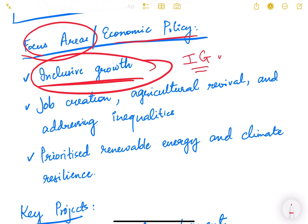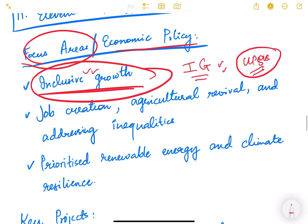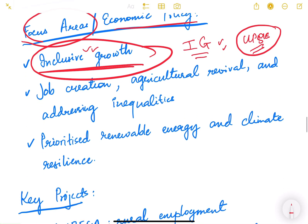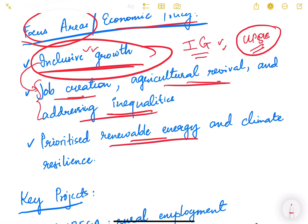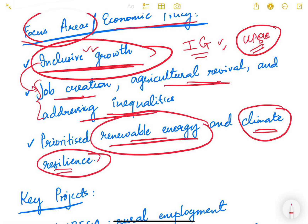Inclusive growth is also an important topic in the UPSC mains syllabus. Job creation, agricultural revival, and addressing inequalities were key focus areas — all part of inclusive growth. The plan also prioritized renewable energy and climate resilience, marking a shift toward environmental concerns in national planning.